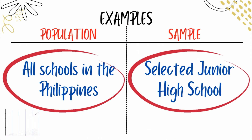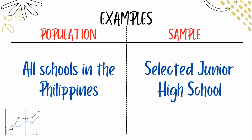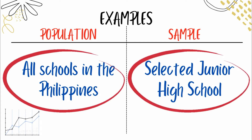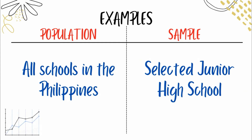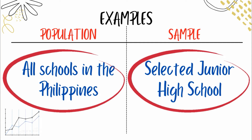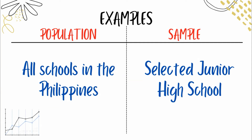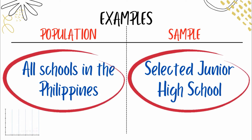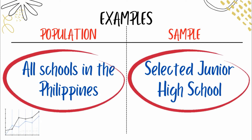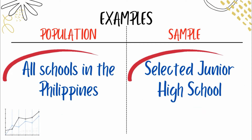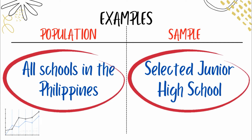An example of population: all schools in the Philippines. If we want to study the favorite subjects of all students in every school in the Philippines, that's too many. So instead, we can just select junior high school students. If the population is all schools in the Philippines, then we can get a selected group of junior high school students as our sample. Population is very broad, while sample is very specific.